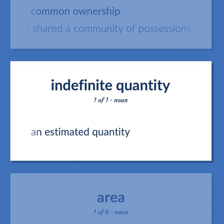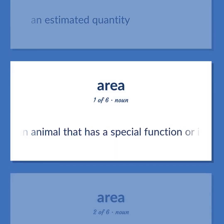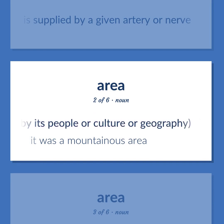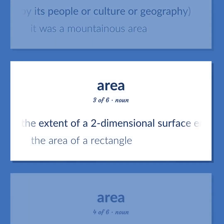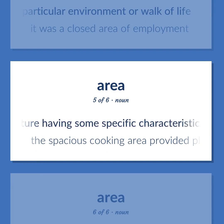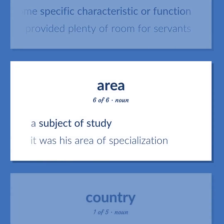Area: an estimated quantity. A part of an animal that has a special function or is supplied by a given artery or nerve. A particular geographical region of indefinite boundary, usually serving some special purpose or distinguished by its people or culture or geography — it was a mountainous area. The extent of a two-dimensional surface enclosed within a boundary — the area of a rectangle. A particular environment or walk of life — it was a closed area of employment. A part of a structure having some specific characteristic or function — the spacious cooking area provided plenty of room for servants. A subject of study — it was his area of specialization.